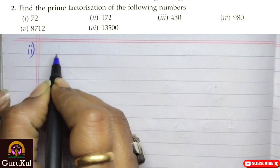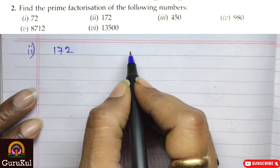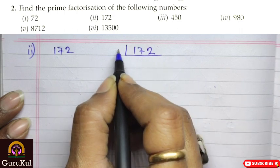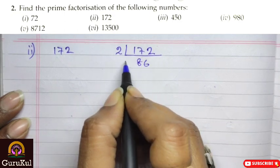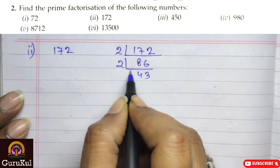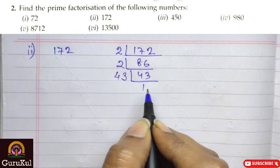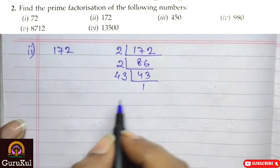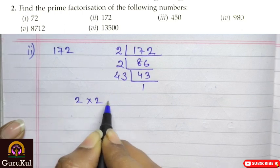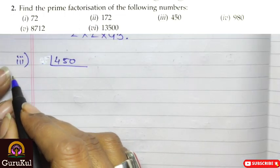Second number is 172. Starting with 2: 172 ÷ 2 = 86, ÷ 2 = 43. Now 43 is a prime number, so 43 ÷ 43 = 1. The prime factorization is 2 × 2 × 43.